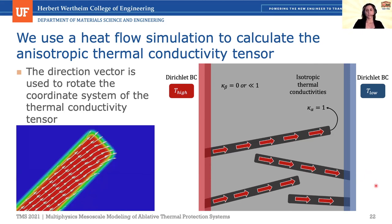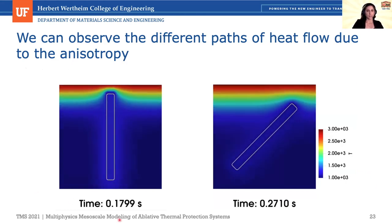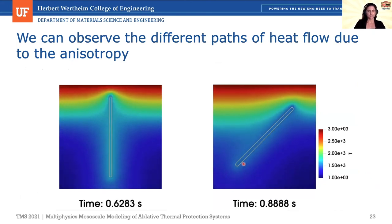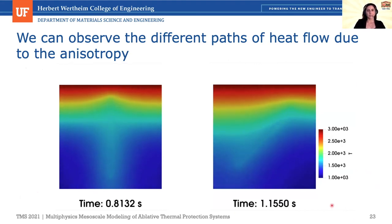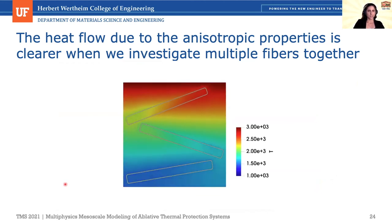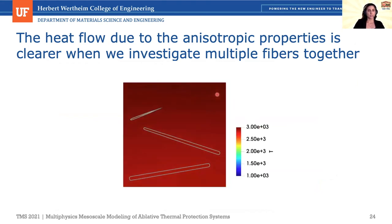With all this implemented, we can observe how it plays out in simulations. On the left we have a vertical fiber, on the right a 45-degree fiber, and we can see temperature changing throughout the fiber direction. It was important to model the anisotropy of thermal conductivity, especially with multiple fibers. The temperature flows through these fibers, and regions that are hotter oxidize first because the reaction rate constant is a function of temperature, followed later by fibers in cooler regions.